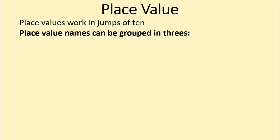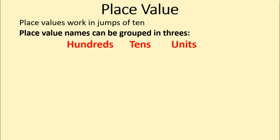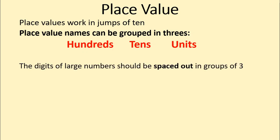Place value works in jumps of 10s, but place value names can be grouped into groups of 3: hundreds, tens, and units. That group of 3 occurs in the units, in the thousands, in the millions, in the billions, and so on — always in groups of 3s. We space out our groups in groups of 3s: hundreds, tens, and units of billions; hundreds, tens, and units of millions; hundreds, tens, and units of thousands; hundreds, tens, and units of units. Always grouped in 3s.